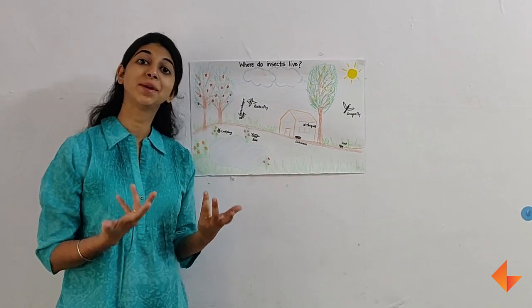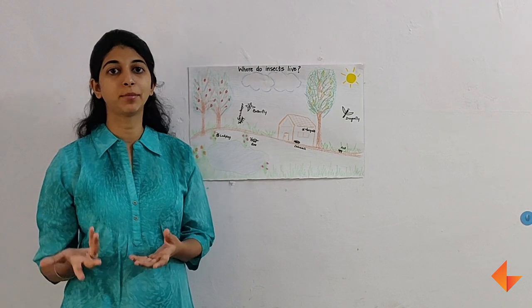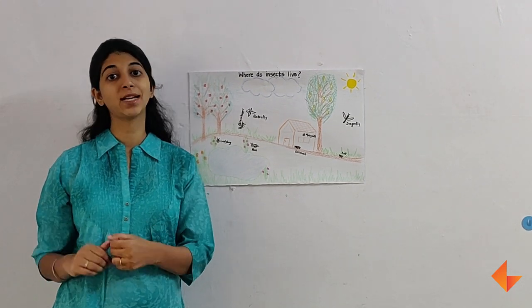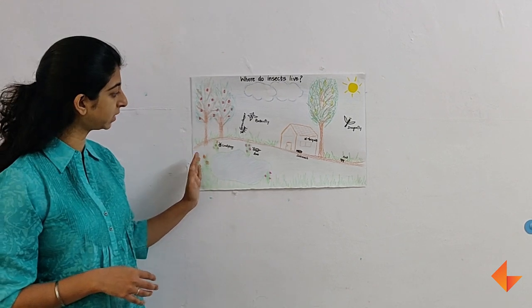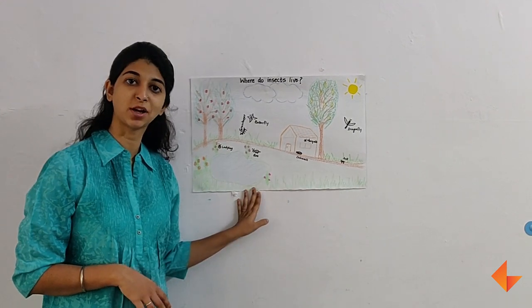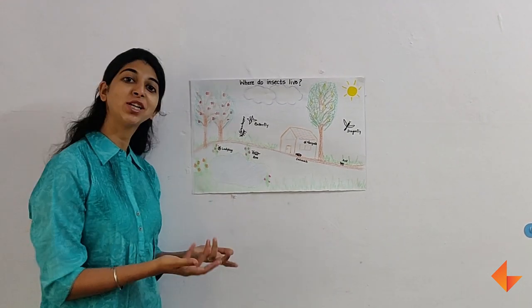Continue doing this for as many insects as the children can come up with, or that they can glean from the pictures in their book. As you can see we have done this for quite a few insects on this chart. If the children enjoy the activity.